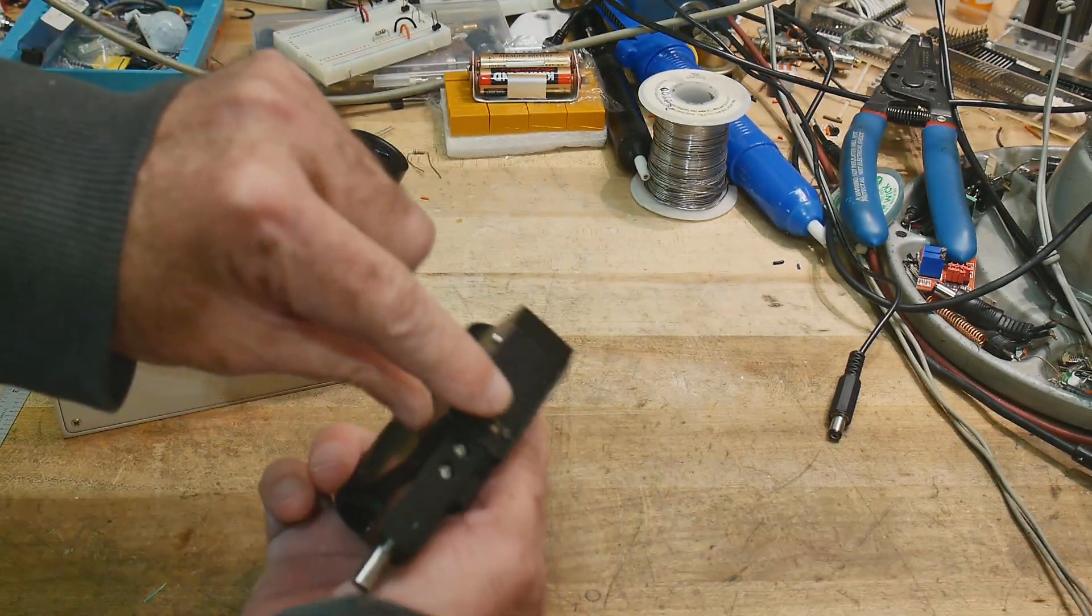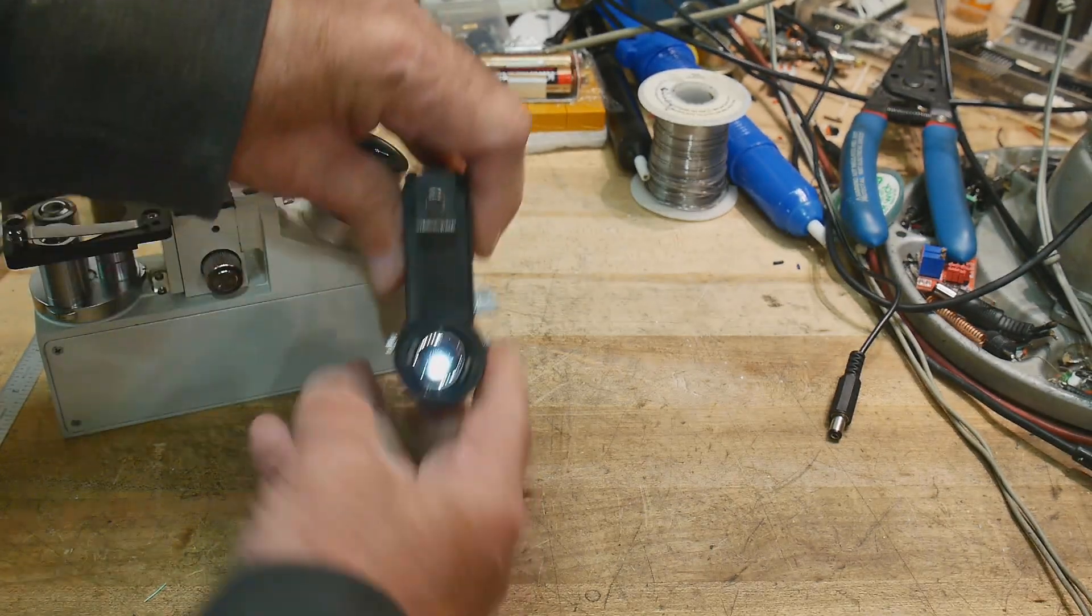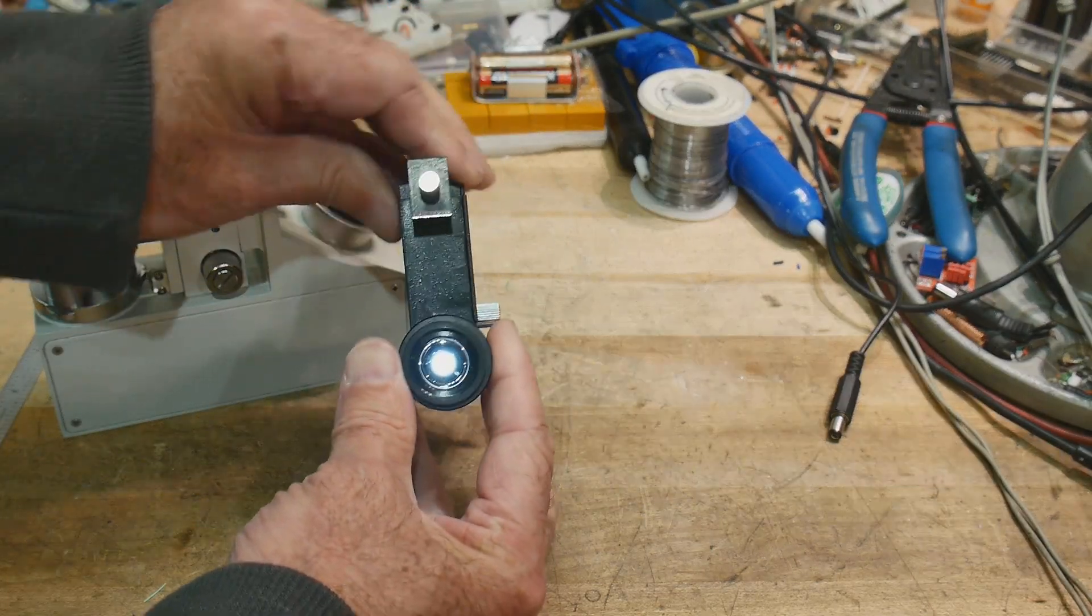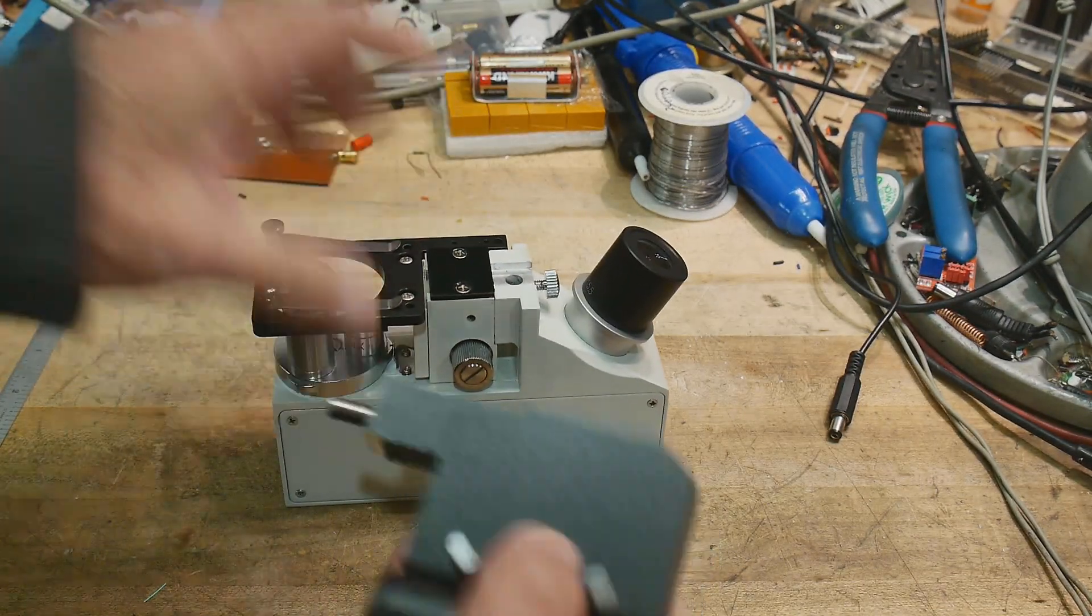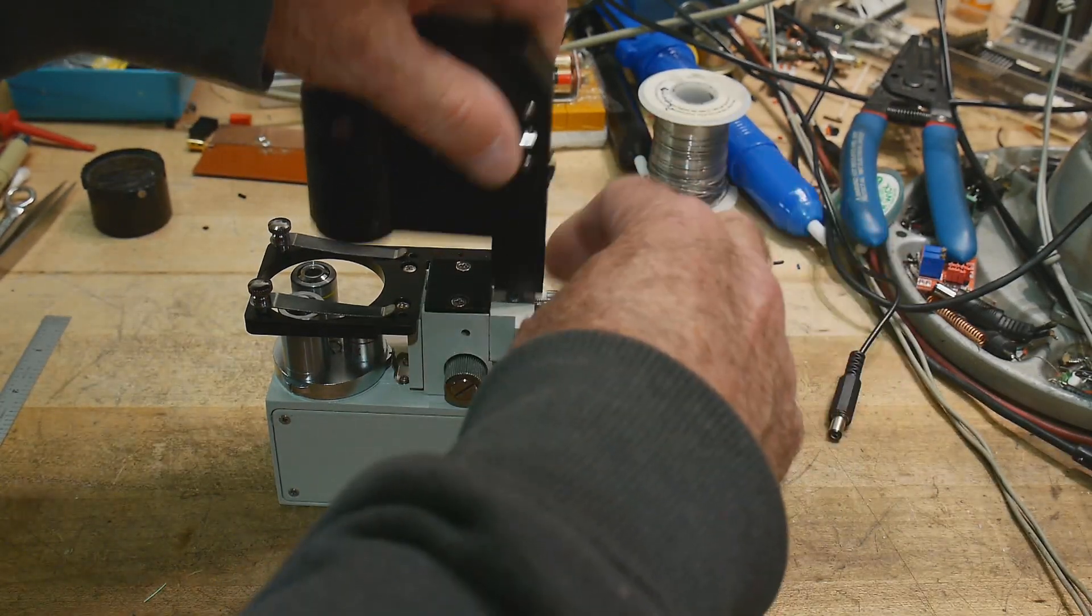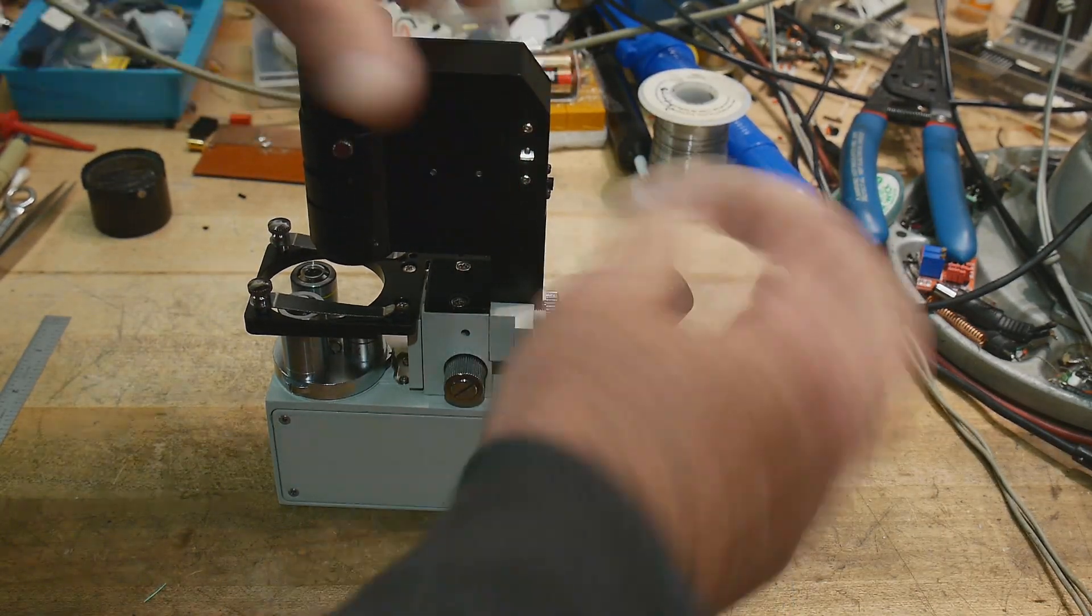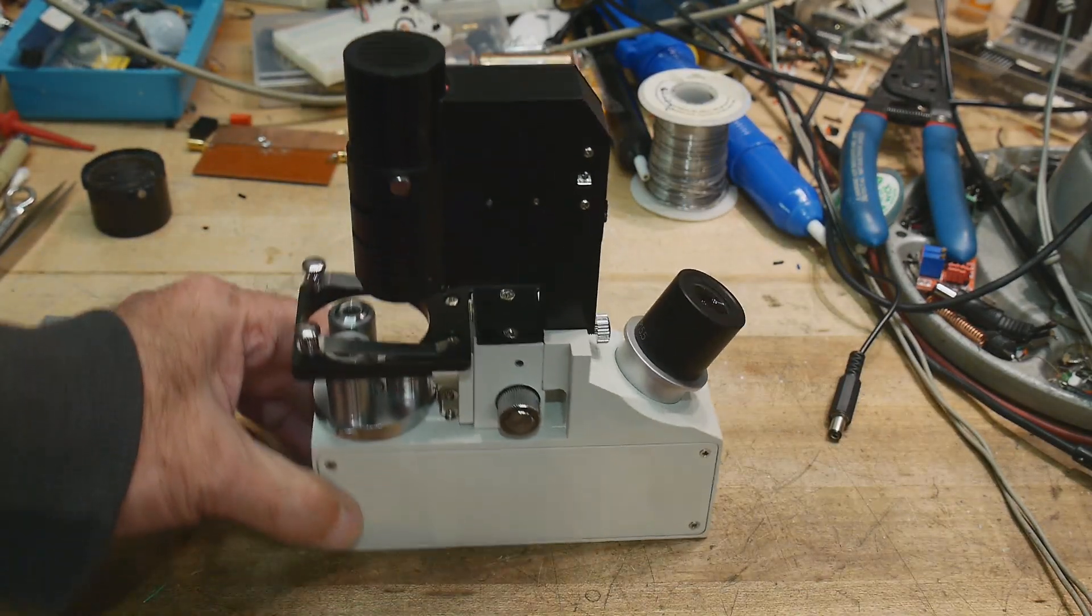There's a little switch on the side here and we can turn that on. I think we can see that it's lit up, right? So we have a light source. The light source can go on top. You can use it without a light source, just use it with the sun coming down or whatever, but there you go—now you've got a complete microscope.